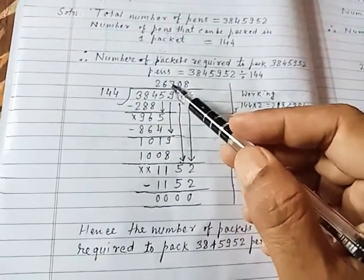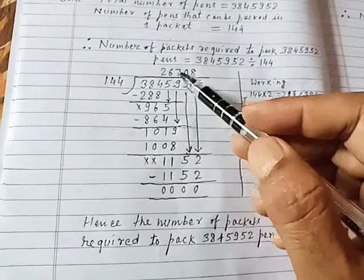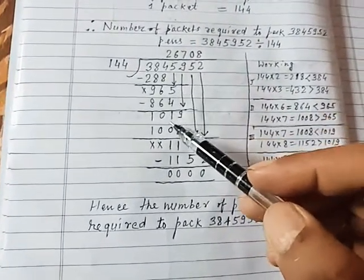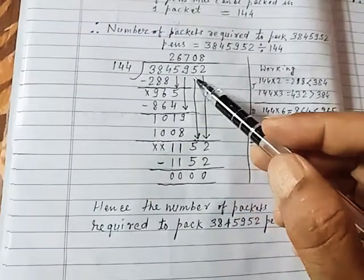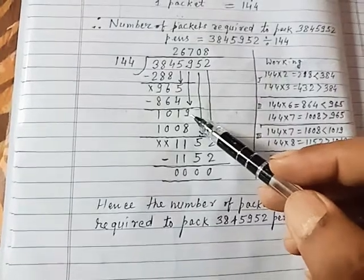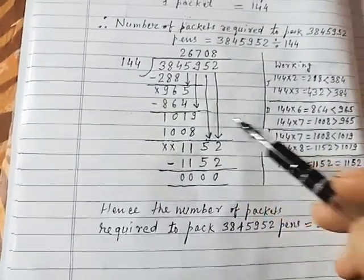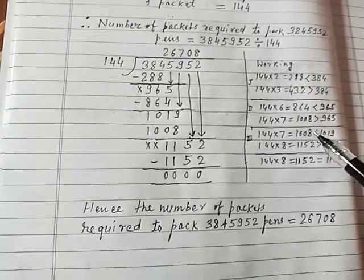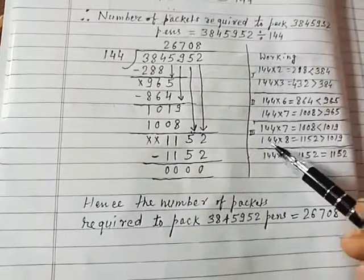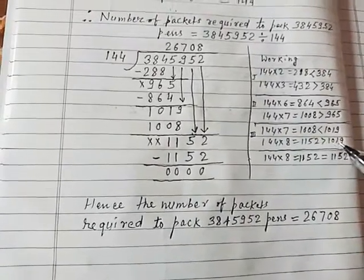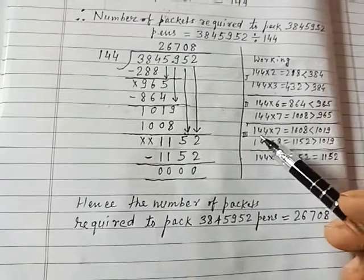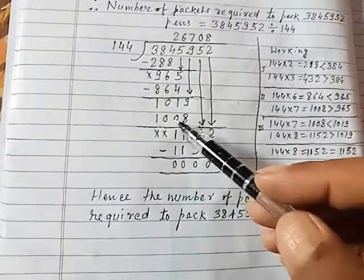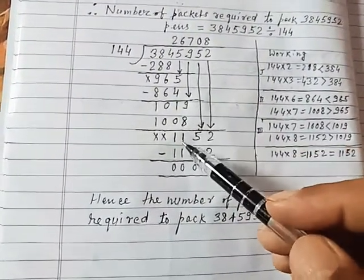So we should write here as 6 in the quotient and write here as 864. Now subtracting we will get 101, and now putting down another digit, that is 9 from the dividend, we will get 1019. Now again in the third step, 144 into 7 is equal to 1008 which is less than 1019, and 144 into 8 is equal to 1152 which is greater than 1019. That is, 144 is contained 7 times in 1019. So we should write our quotient as 7 and here 1008. On subtracting we will get 11.